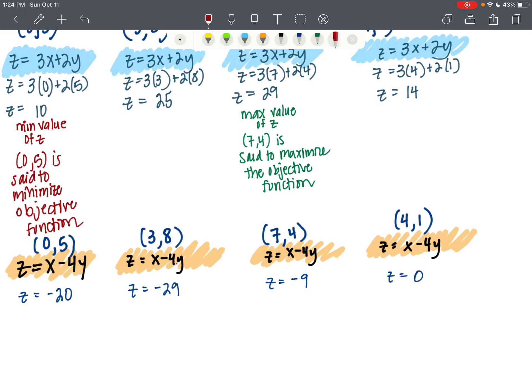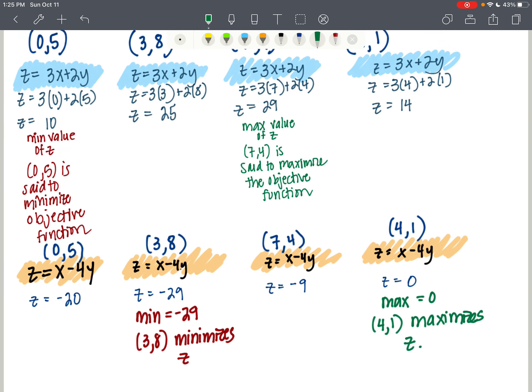So our minimum value is negative 29. 3, 8 minimizes z, which is our objective function. And then our maximum value is 0. So the max, that's the highest value. That's 0. So 4, 1 maximizes z. So if you got that, yay. So now we know how to actually maximize or minimize an objective function, or at least come up with those maximum minimum values.